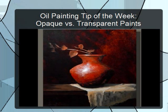Some of the transparent colors are alizarin crimson, permanent rose, olive green, and transparent oxide red — those are very transparent. The opaque colors are generally the cadmium colors, the umbers, and titanium white or creminants white. Whatever you're using in terms of white is always very opaque.